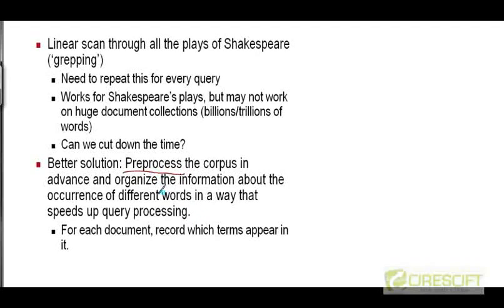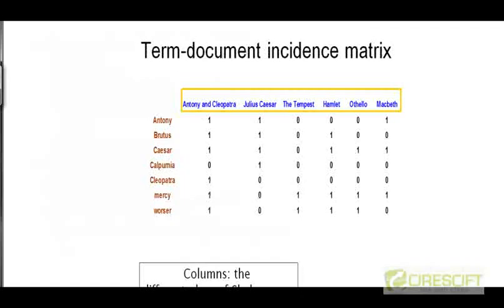So what kind of preprocessing are we talking about? Suppose we wade through the corpus in advance, and as we are parsing the entire corpus, we record which terms appear in what documents. For each document that we parse, we are going to record what terms appeared in the document. And the result of that is going to be a matrix like this.